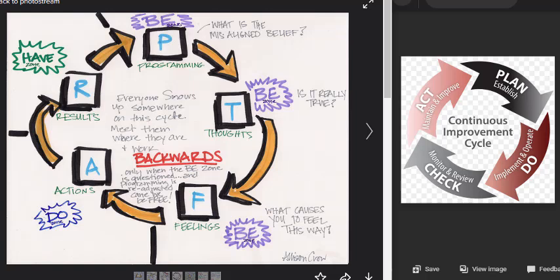Your feelings lead to A, actions, and your actions lead to R, results. That's the PTFAR model. And basically when you're programming and thinking and you're putting your feeling into it, it's moving from your heart to your mind.